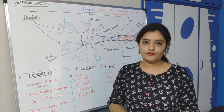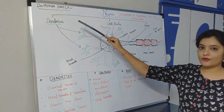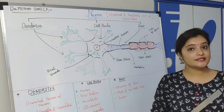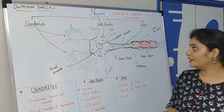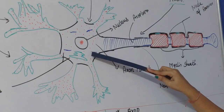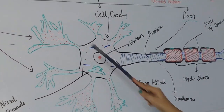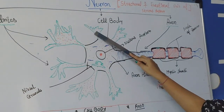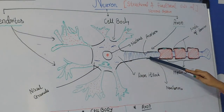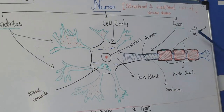Now we quickly see the structure of neuron. The neuron consists of mainly three structures: dendrites, cell body, and axon. Can you see this is the structure of neuron? This irregular structure is the cell body. From the cell body many processes are arising. These short processes, green in color, are all called as dendrites. And the one long process which arises from the cell body is called as axon.